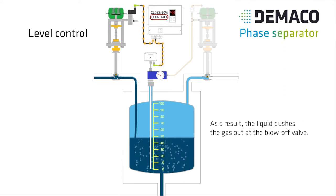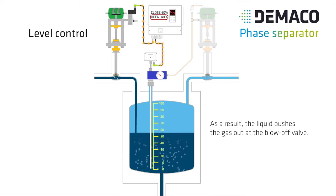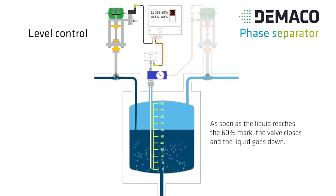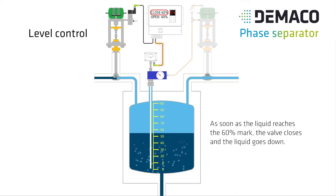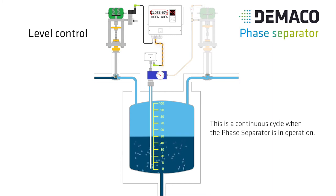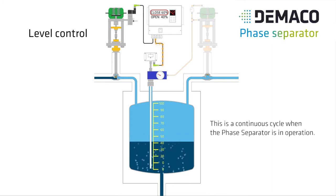As a result, the liquid pushes the gas out at the blow-off valve. As soon as the liquid reaches the 60% mark, the valve closes and the liquid level goes down. This is a continuous cycle when the Phase Separator is in operation.